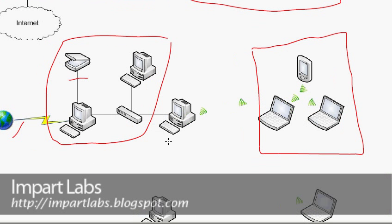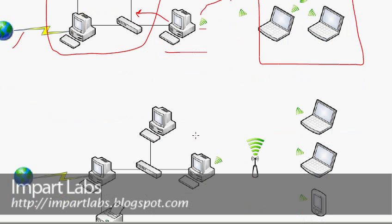We have the ad hoc network here and the Ethernet network here. This computer has access to the ad hoc network because it has a wireless network card, and it also has an Ethernet network card which connects to the Ethernet network — so it can act as a bridge.